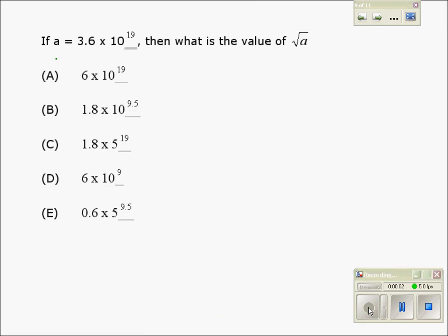If a equals 3.6 times 10 to the power 19, what is the value of under root a?